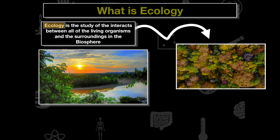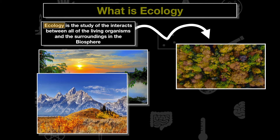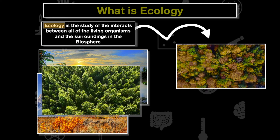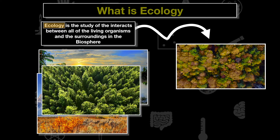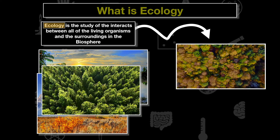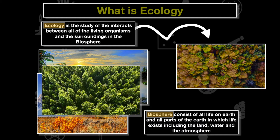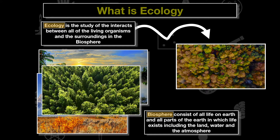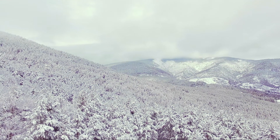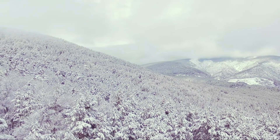Some of these environments might be foreign, like a tropical rainforest or mountains like the Tetons, but these forests are around us all the time. We as humans are part of this ecological unit and part of this biosphere. The biosphere consists of all life on earth and all parts of earth in which life exists — the land, water, atmosphere, and more.